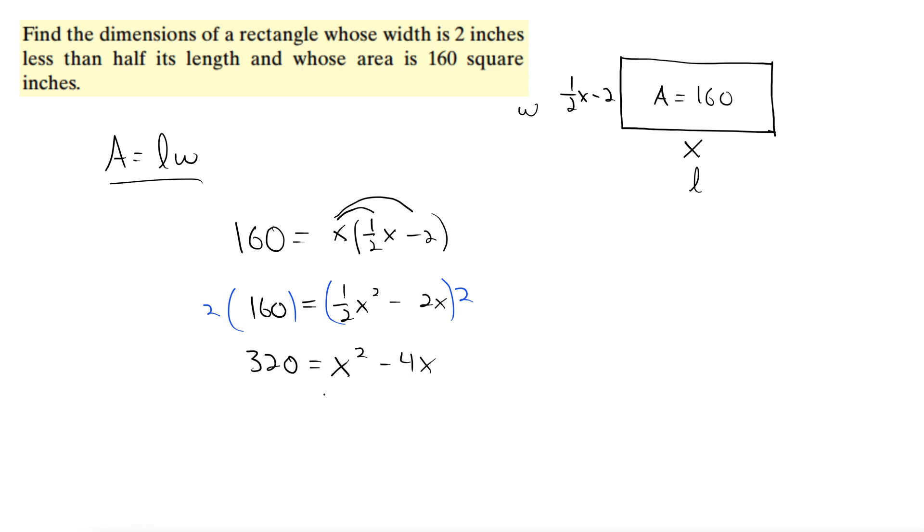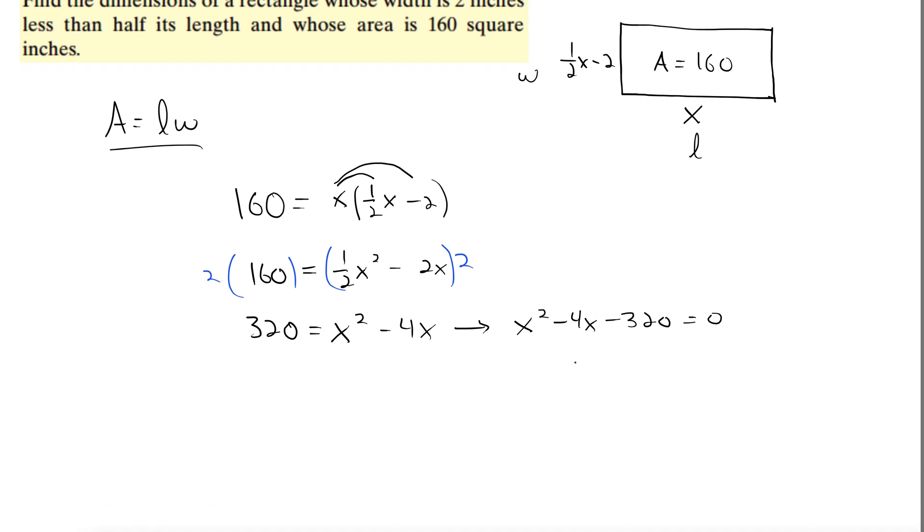Okay. Well, anything with x squared in it likes to be set equal to 0, so let's do that. x squared minus 4x minus 320 equals 0. Okay, so let's factor this.